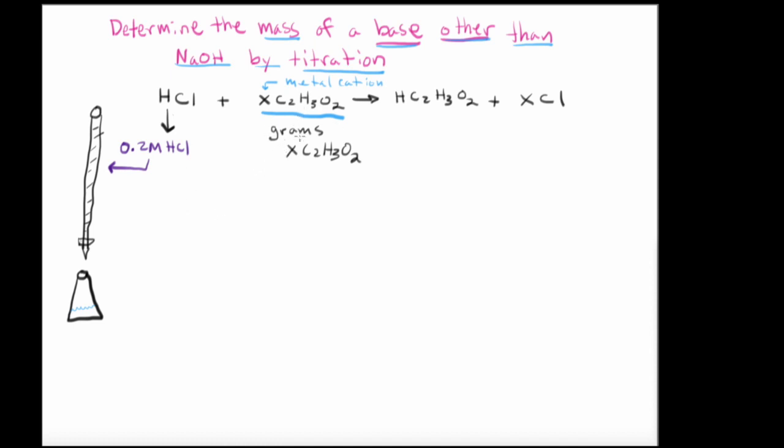We're going to calculate the mass in grams of XC2H3O2. The molar mass of this particular molecule we're going to take to be 82 grams per mole, so I'm going to go ahead and write that in here. Now, you're going to start out with a solution that's going to be approximately 25 mLs that will contain XC2H3O2 plus water.